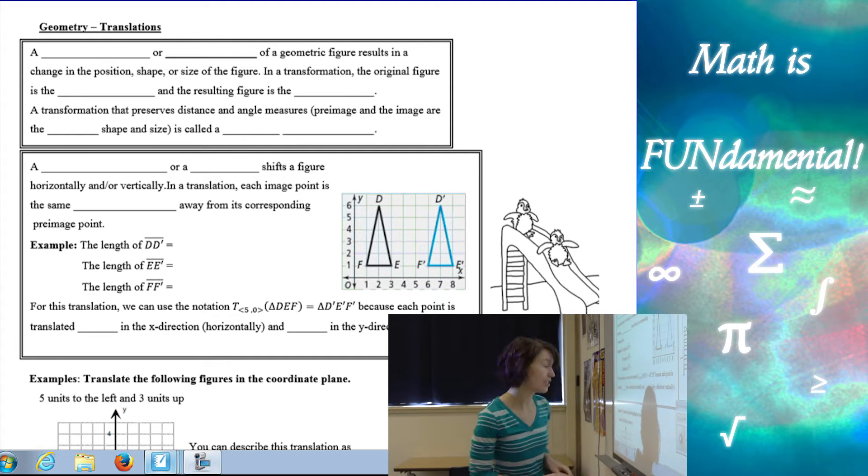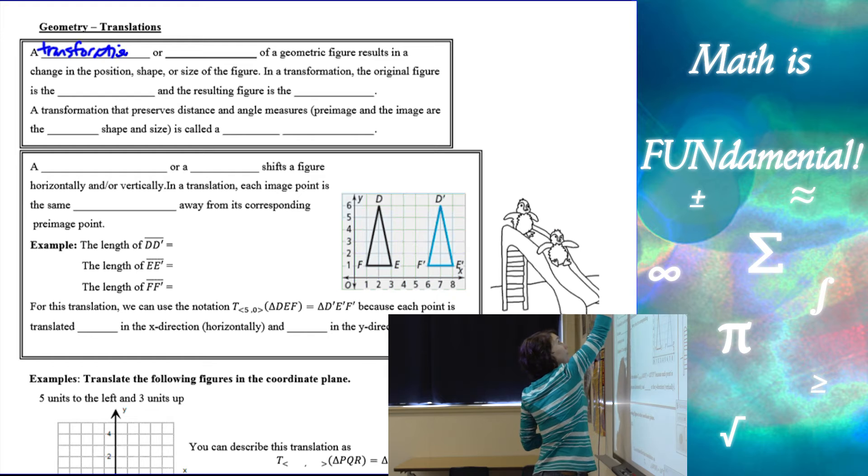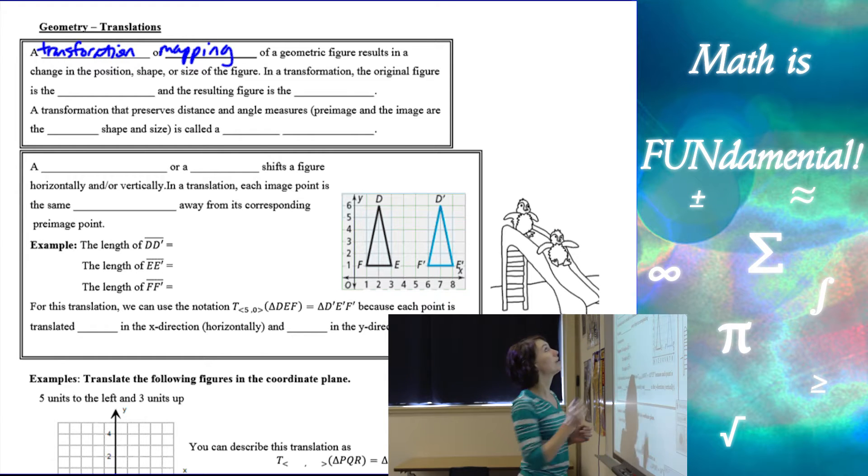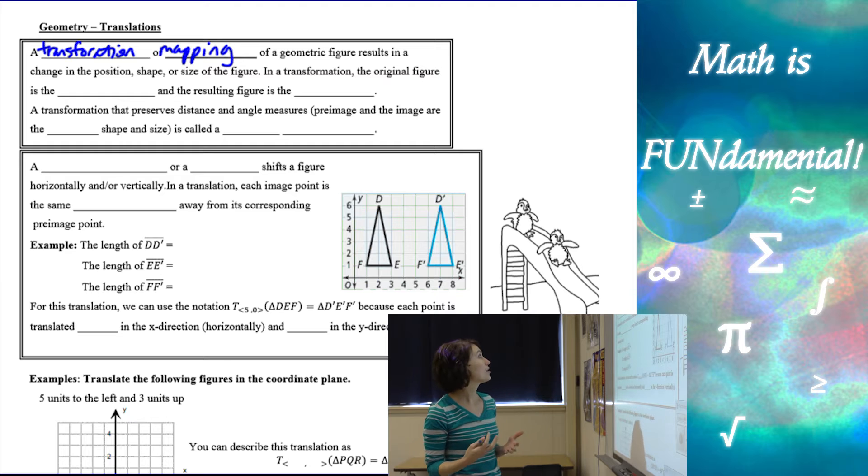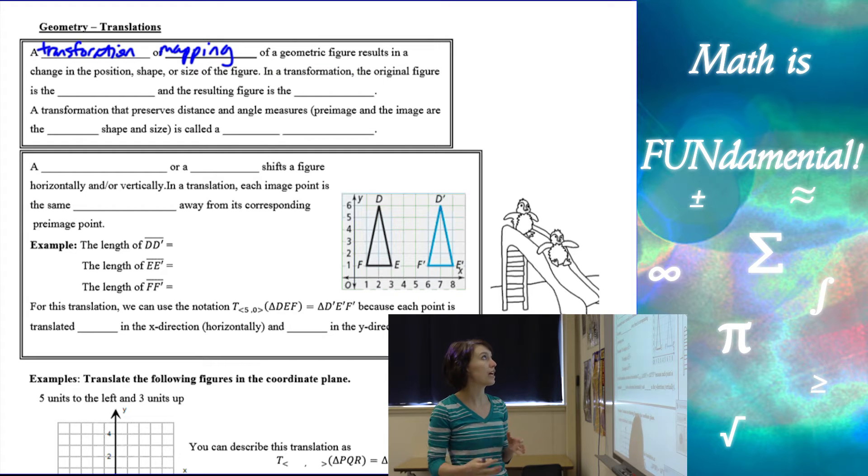The first definition we're going to start with is a transformation. So a transformation or sometimes what is referred to as a mapping of a geometric figure results in the change in the position, shape, or size of the figure. So if we take a figure and change its position, shape, or size, that's what we call a transformation.